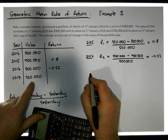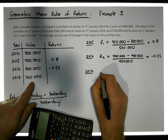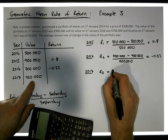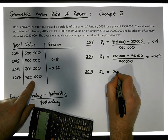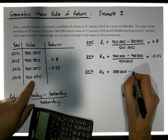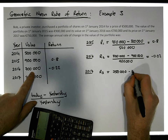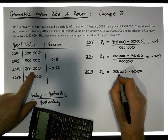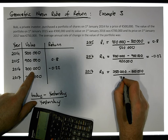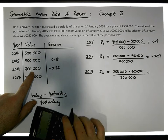And what about in 2017? Let's call this R3. The return — the price is €750,000 minus the previous year's, which is €700,000, relative to the previous year's, which is €700,000. That gives us an increase of €50,000 divided by €700,000.